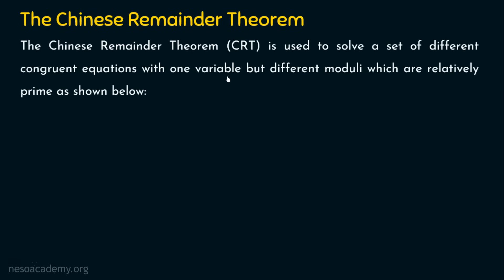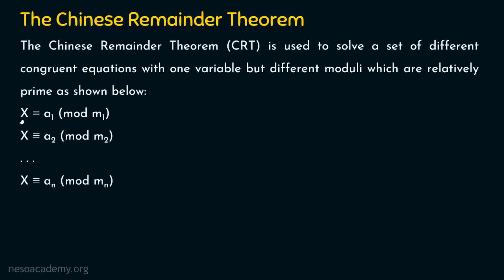Before that, let's have a theoretical understanding. We have different congruent equations where x is congruent to a1 mod m1, x is congruent to a2 mod m2, up to x is congruent to an mod mn. We have one variable which is x, and we have n different congruent equations with different moduli — mod m1, mod m2, mod mn — but the variable is just one.